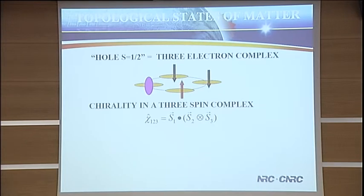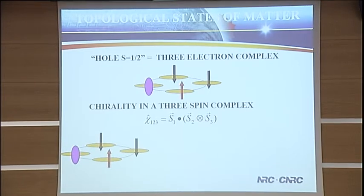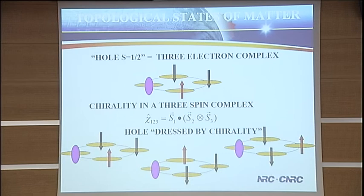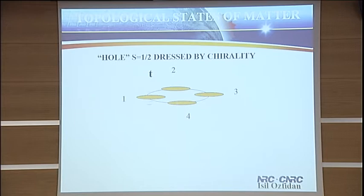This spin-1/2 three-spin complex is characterized by a quantity called chirality, which underlies the RVB theory. It has two eigenvalues corresponding to the direction of motion of the minority spin — moving left or right — so the hole is dressed by chirality. When the hole tunnels from 4 to 1, it knows what geometry it is in — whether it's on a ring or a line, which are two topologically distinct geometries. If it's on a ring and can tunnel, the matrix element acquires a phase associated with the chirality operator of the three-electron complex.